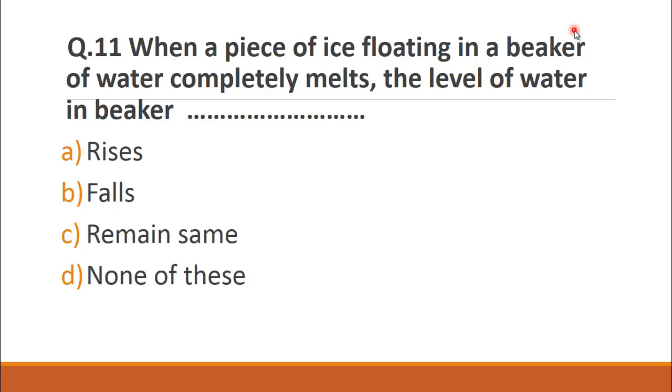MCQ number 11 is: When a piece of ice floating in a beaker of water completely melts, the level of water in beaker? The choices are A. rises, B. falls, C. remain same and D. none of these. We know that when a solid body is floating in water, the increase in volume that occurs is equal to the amount of water displaced by the body. So keeping this point in mind, it is clear that choice C is the correct one and it remains same.